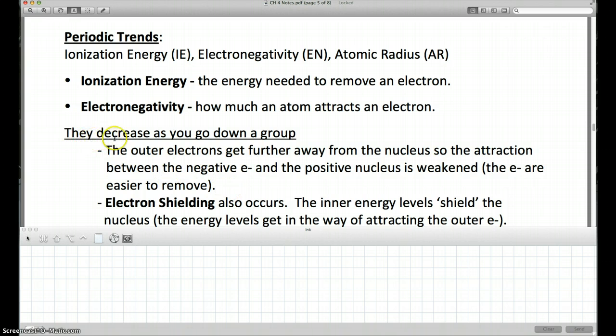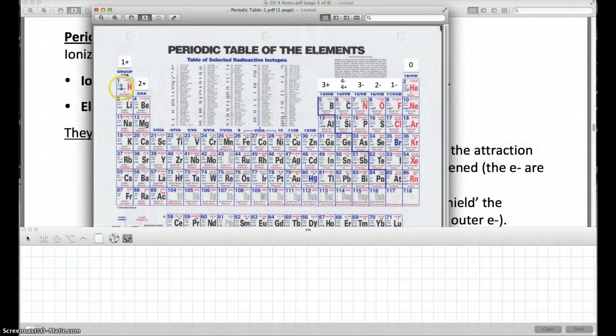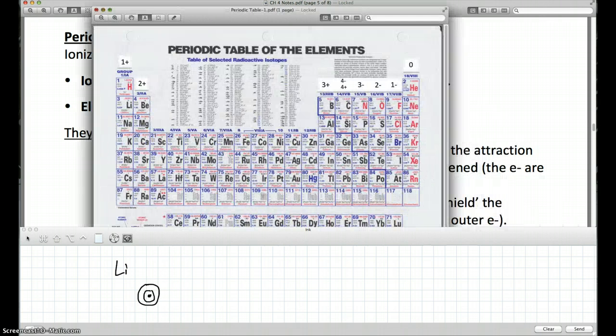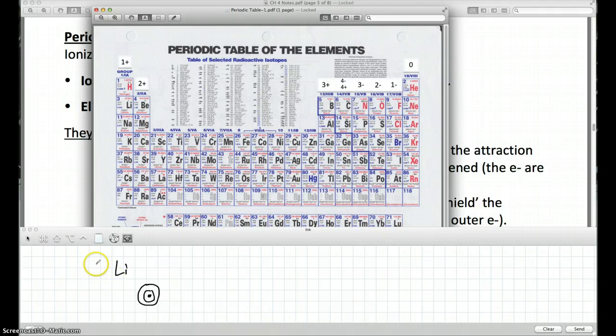Now these two things decrease as you go down a group. And what I mean by that is, as you go from hydrogen to lithium to sodium, potassium, rubidium, cesium, for instance, as you go from the top of the group to the bottom of the group, these two things decrease. Now the reason is, if I draw lithium, draw a picture of the atom, it has two rings. And on that outer ring, it has one electron. Now if I also draw Francium, it is in the seventh row, so it's going to have seven rings.